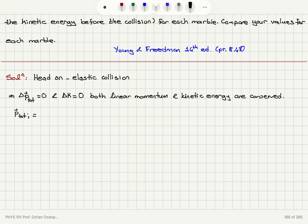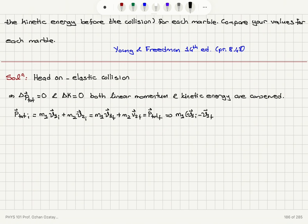Writing the total linear momentum: m1·v1_initial plus m2·v2_initial equals m1·v1_final plus m2·v2_final. Rearranging this equation gives m1(v1_initial minus v1_final) equals m2(v2_final minus v2_initial).